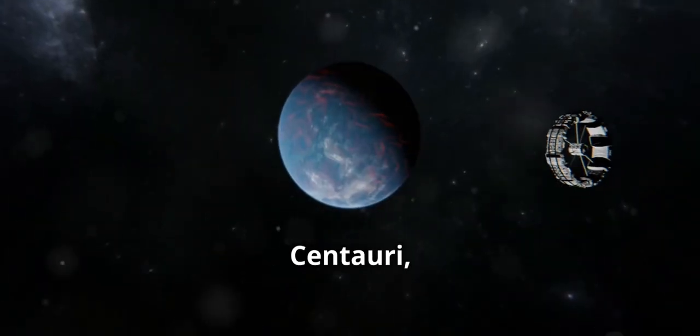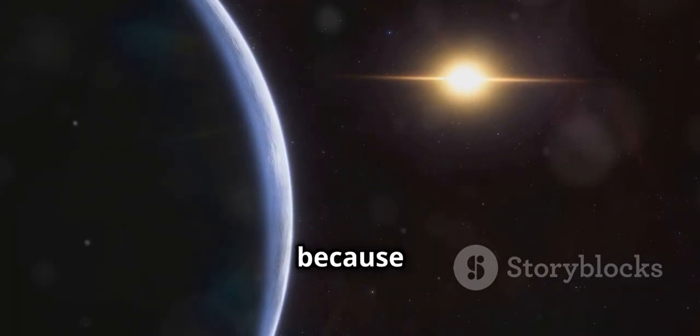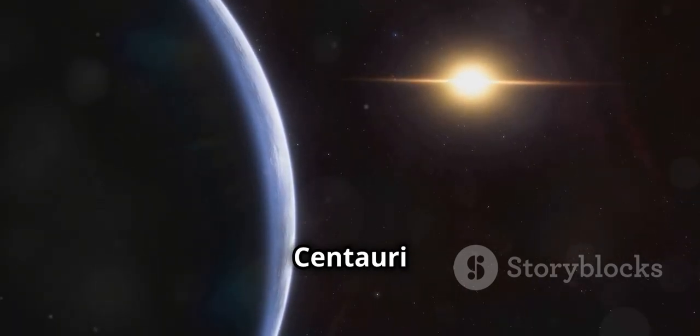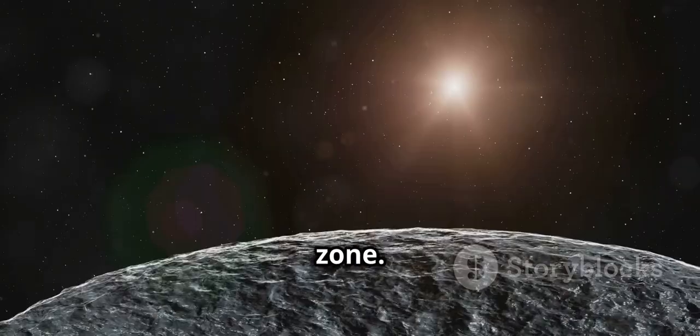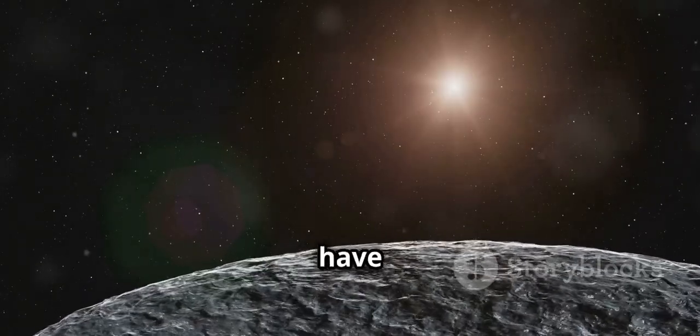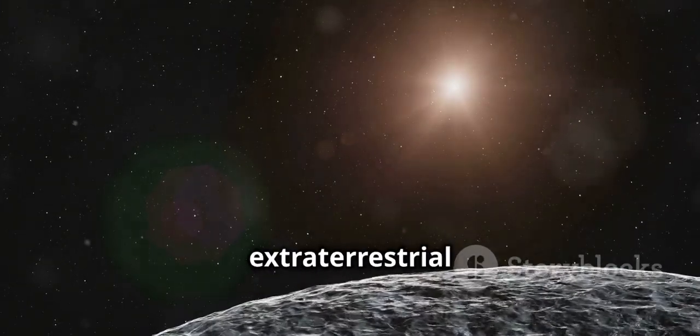Proxima Centauri, though the smallest and dimmest of the three, has garnered significant attention because of its planet, Proxima Centauri B, which lies in the star's habitable zone. This exoplanet has the potential to have liquid water, making it a prime candidate in the search for extraterrestrial life.